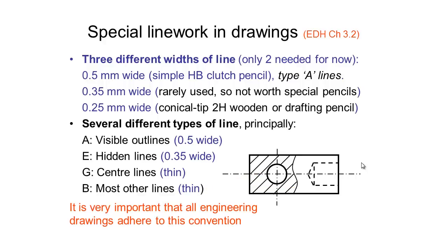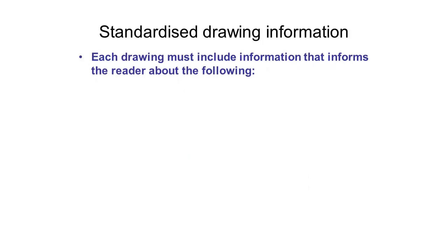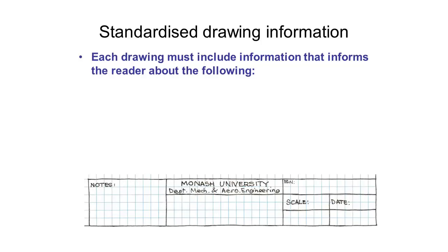It's important that all engineering drawings adhere to these conventions so we can avoid any confusion that may arise from lines of the wrong thickness being mistaken for something they are not. On each drawing that you produce there is some standard information that we need to include. Most of this information is conveyed through what is called a title block, and in the drafting function in SolidWorks it automatically generates a title block for you to fill out.